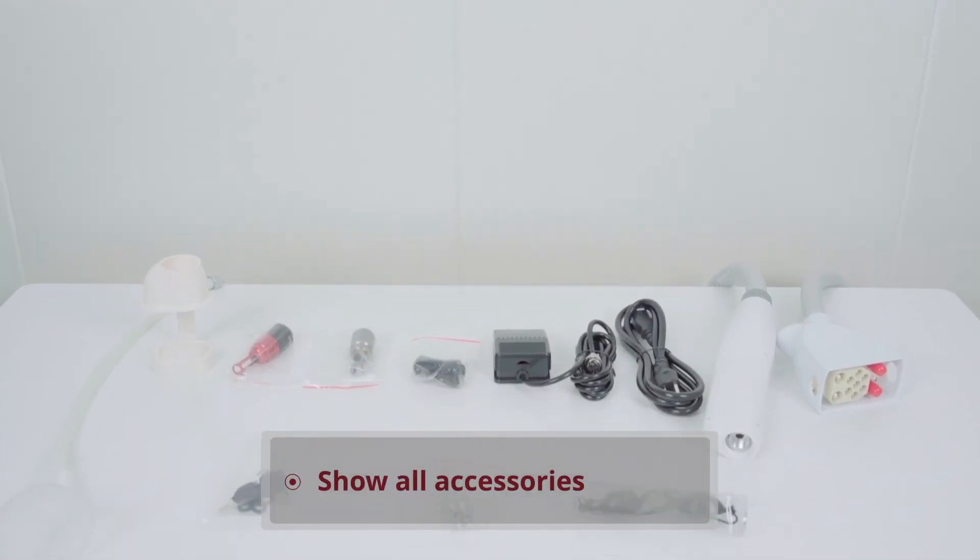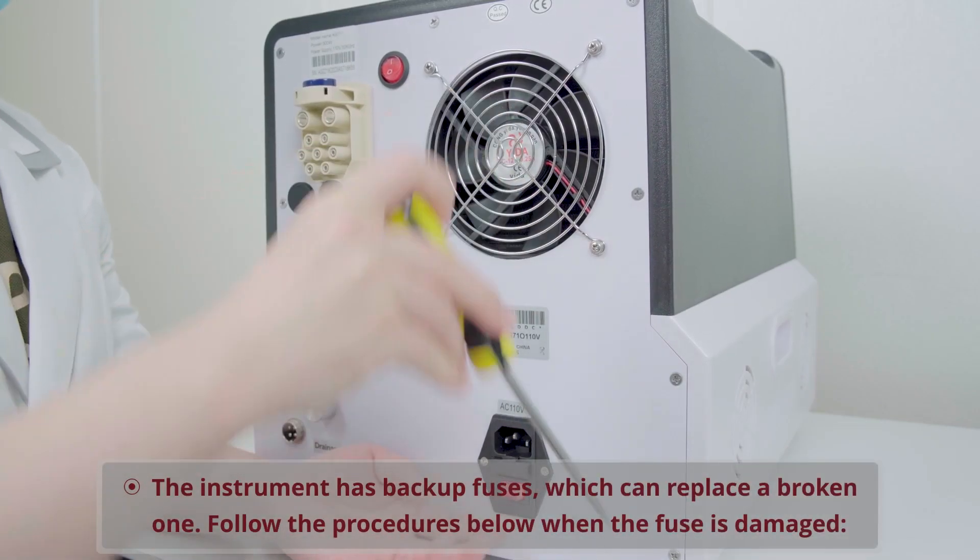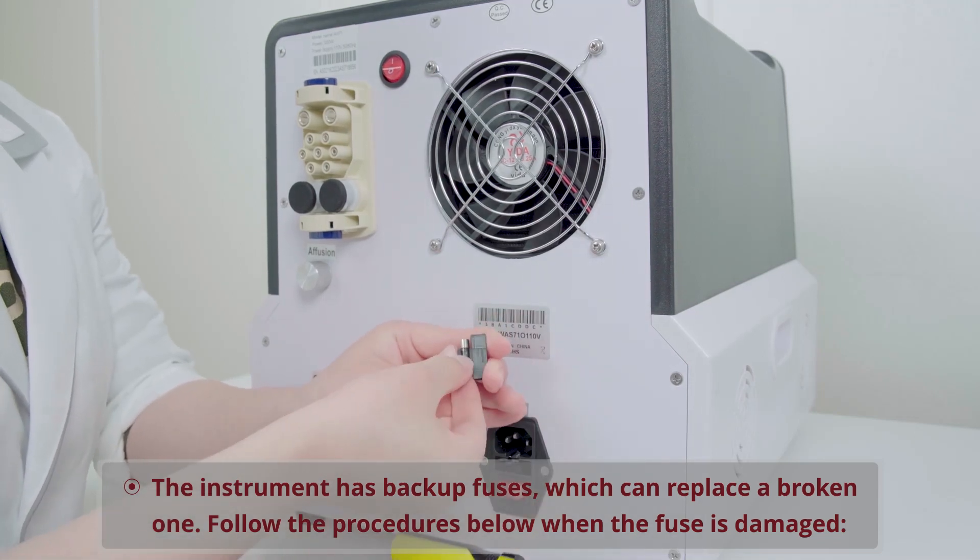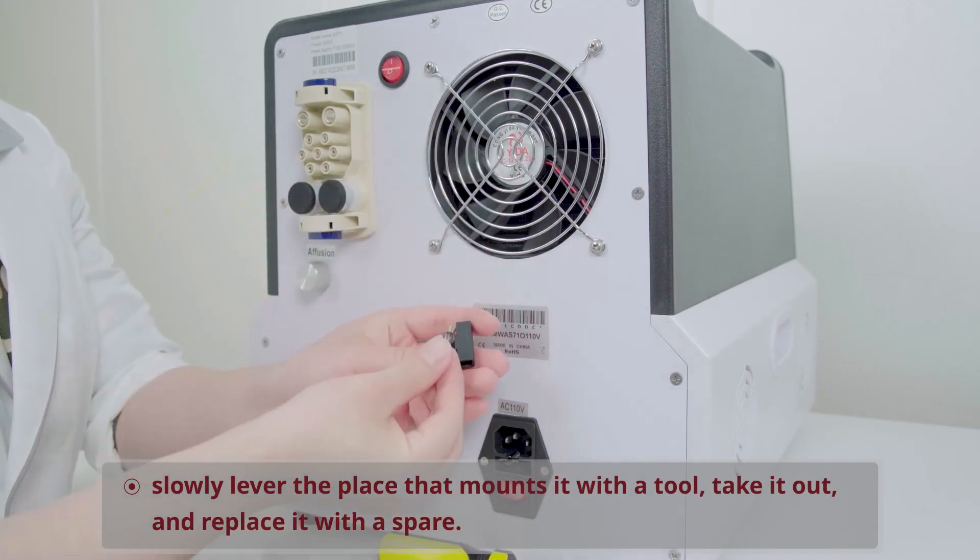Show all accessories. Show the main machine. The instrument has backup fuses which can replace a broken one. Follow the procedures below when the fuse is damaged: slowly lever the place that mounts it with a tool, take it out, and replace it with a spare.